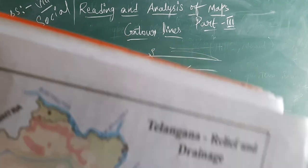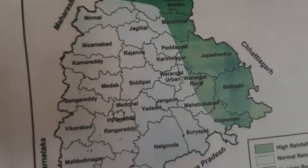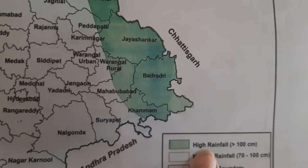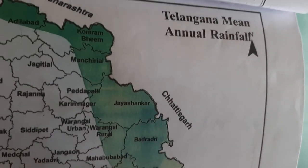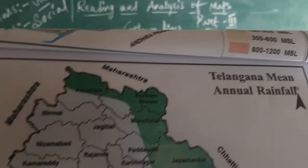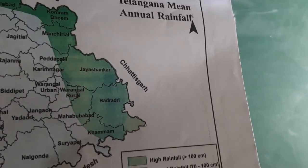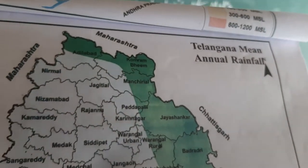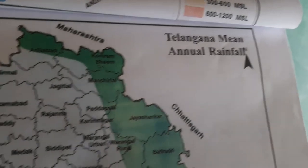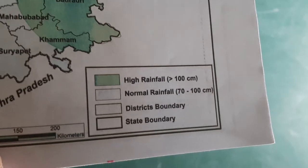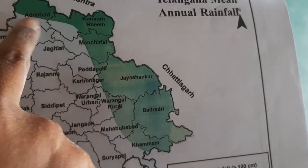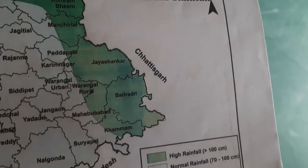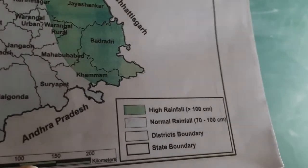Here they gave you about the Telangana relief and drainage facilities. Here you can see the Telangana plateaus and the plains areas. Next, coming to Telangana mean annual rainfall — how the rainfall will be calculated. High rainfall is shown in green color, and you can see the boundaries of Telangana from Adilabad to Kammam with high rainfall. Normal rainfall is from 70 to 100 centimeters — shown in a pale cream color. Here you can see Nirmal, Nizamabad, Kamareddy, Siddipet. The inside lines are known as district boundaries, and the outside boundary is known as the state boundary.